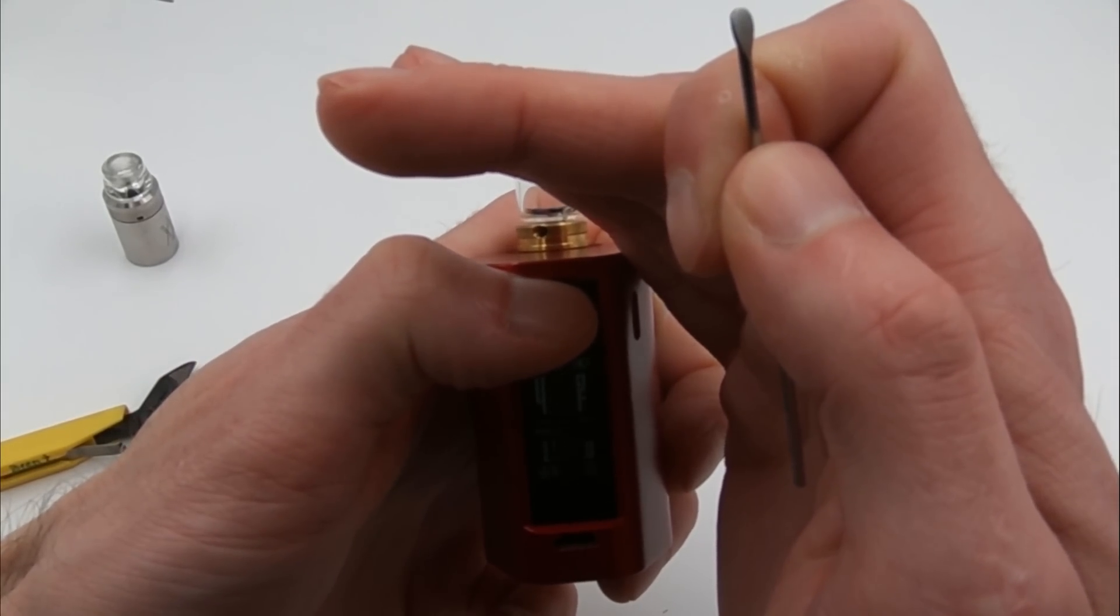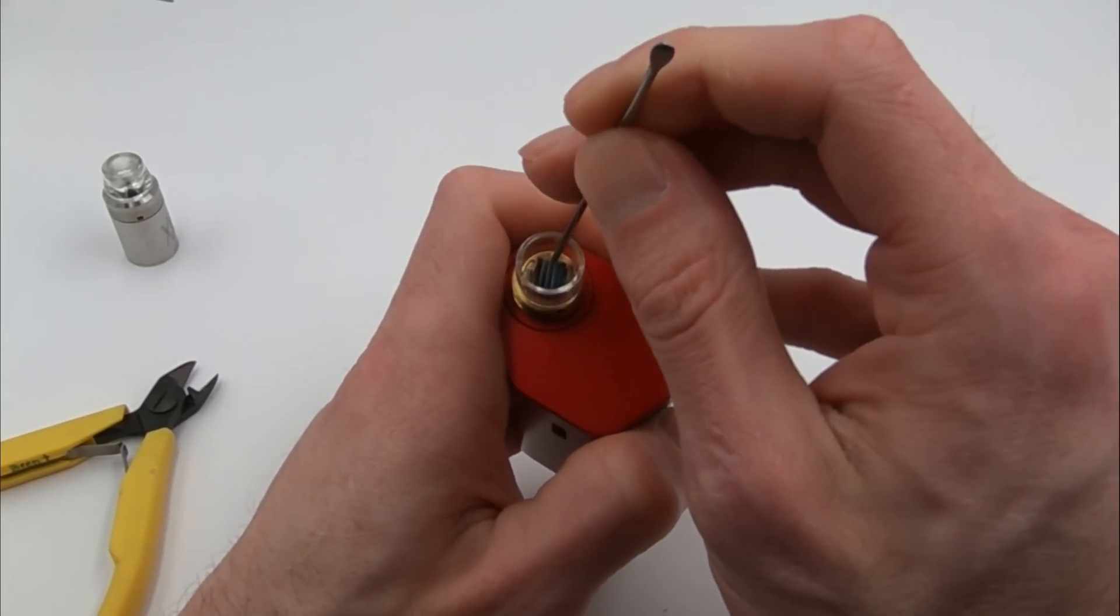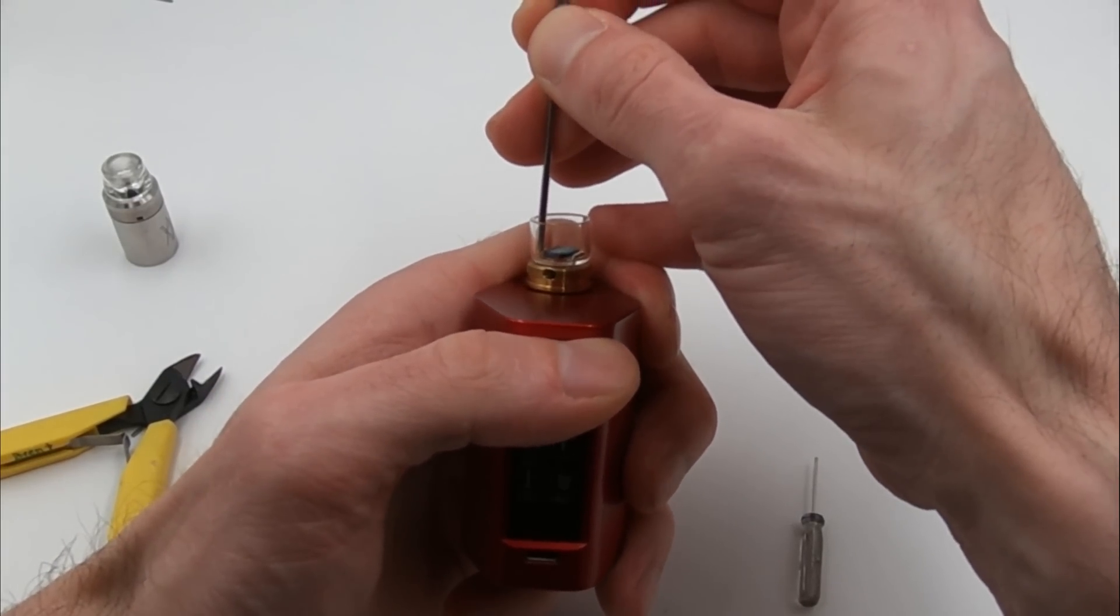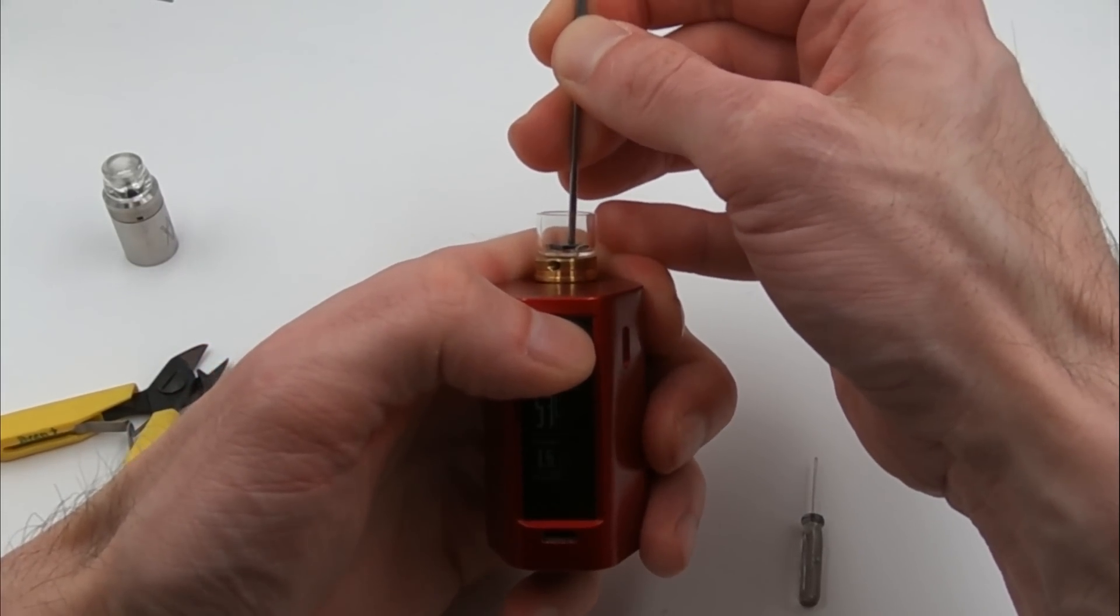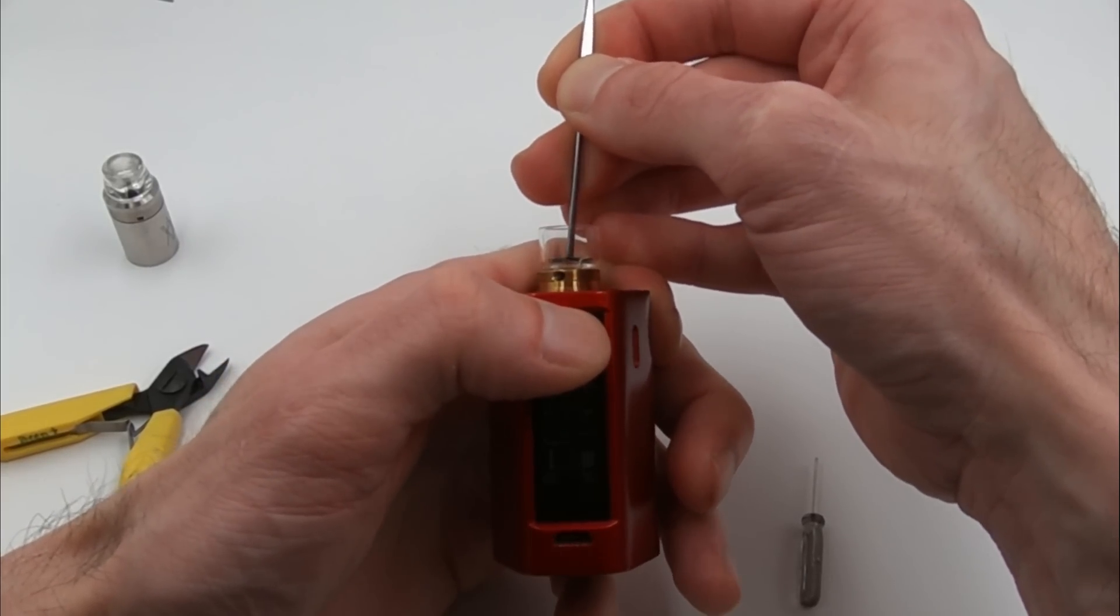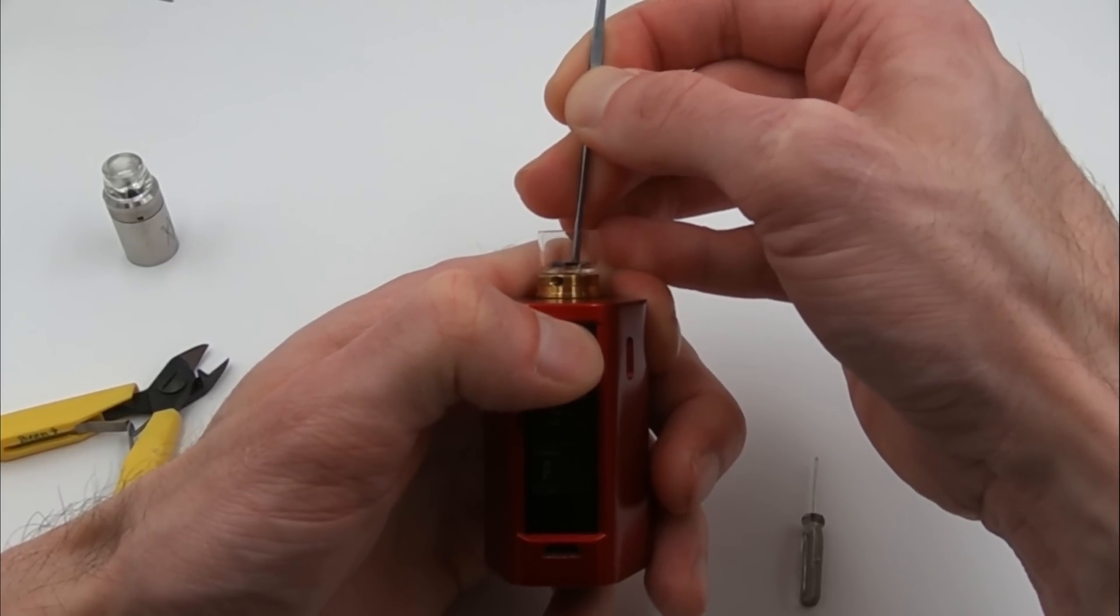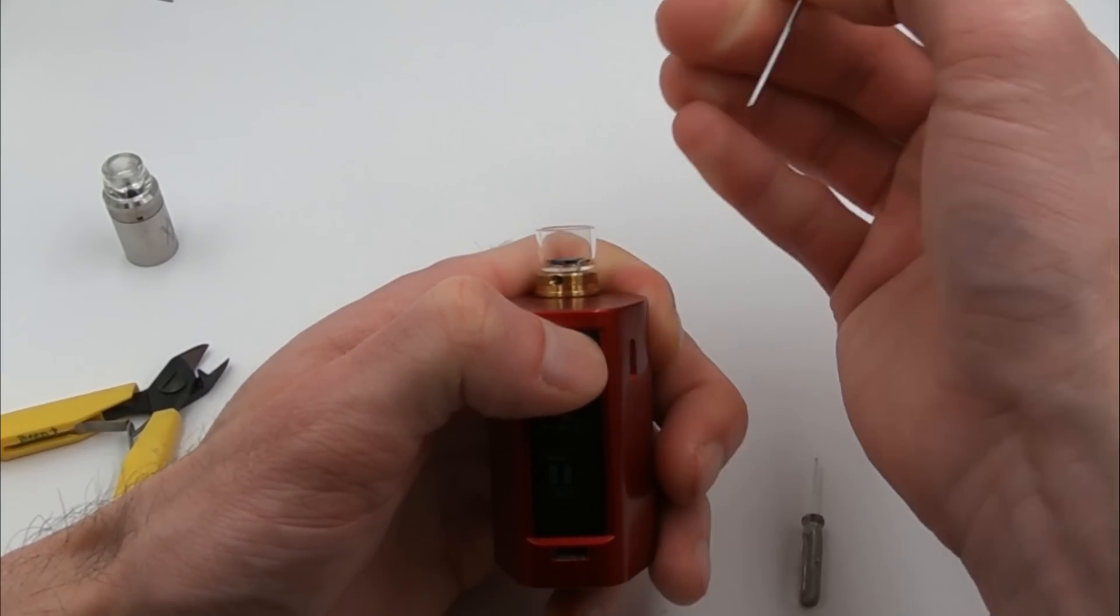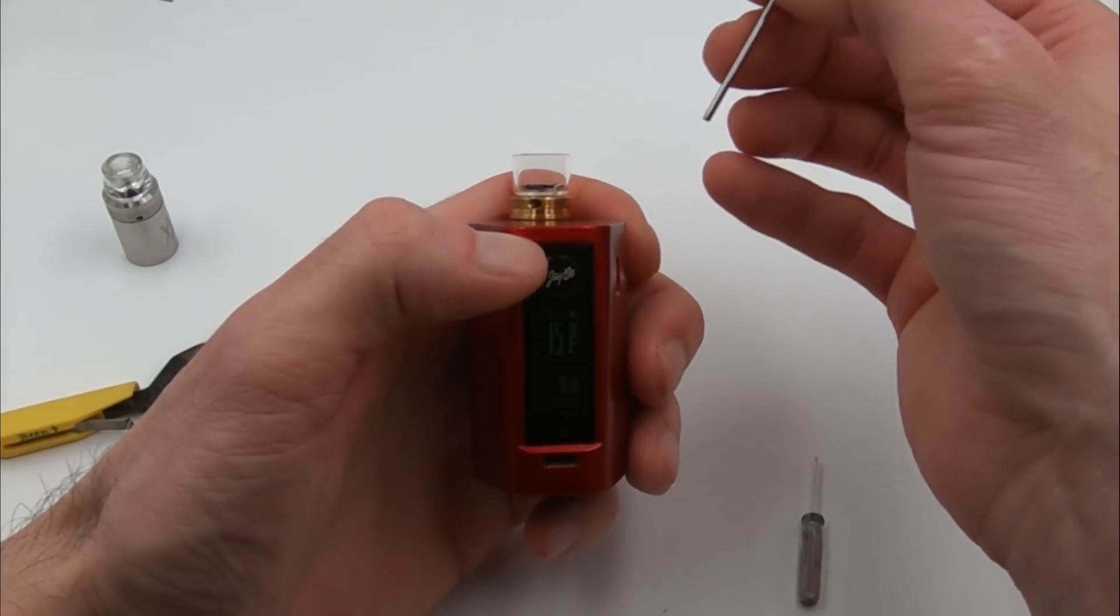And so by firing it in temperature control, you can't see my screen anymore probably, by firing it in temperature control and poking it I can see that my resistance isn't changing, my temperature isn't jumping around, there's no weird behavior if I poke the coil while in temperature control. So that's how you test it.